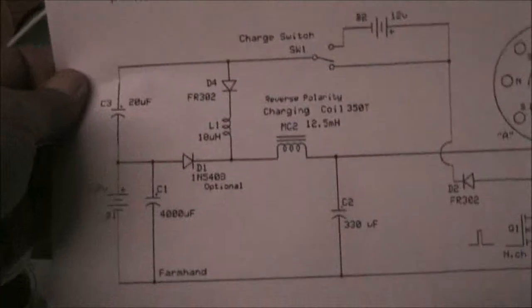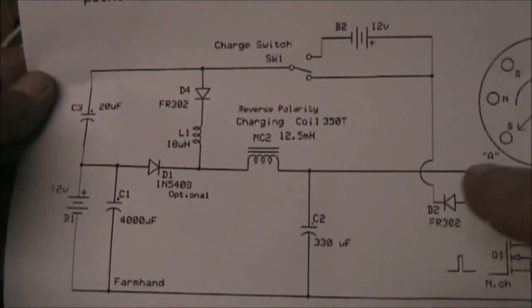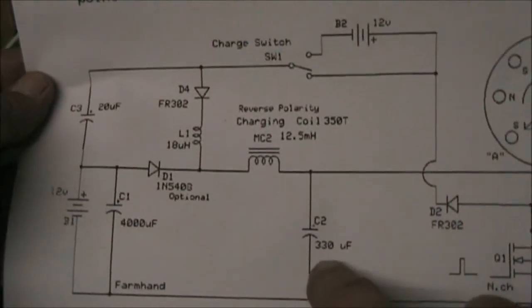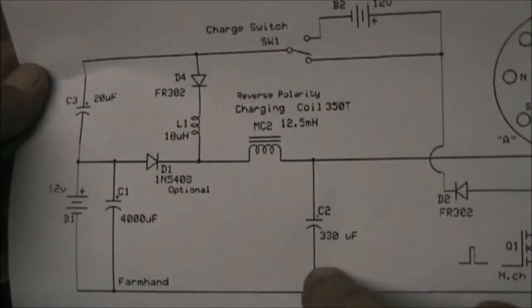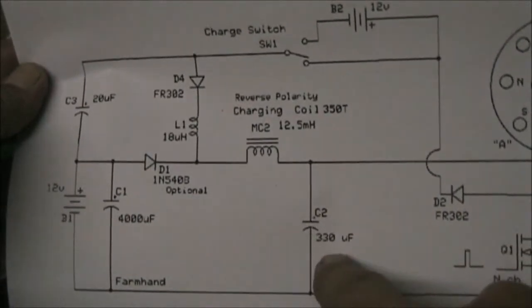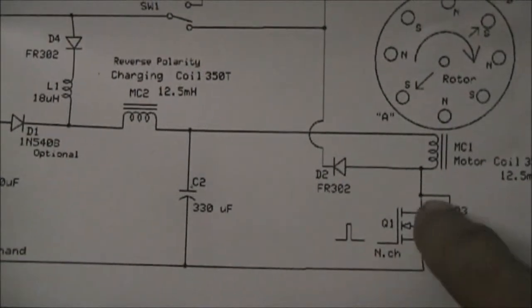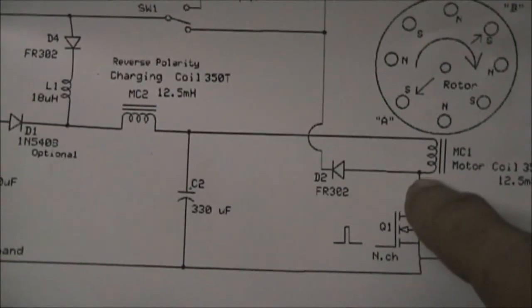Just to explain here again, folks, the yellow trace will be between ground and positive of capacitor C2. And the blue trace will be between ground and the drain of the MOSFET here.